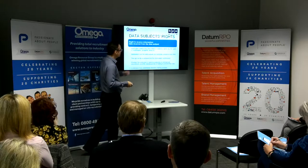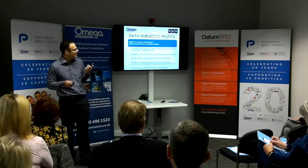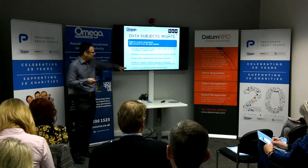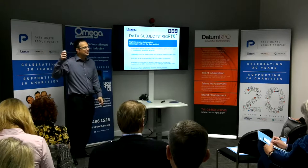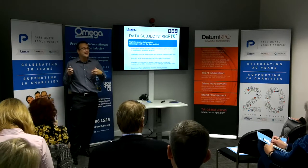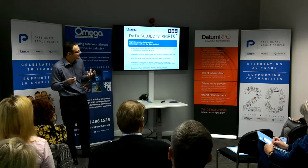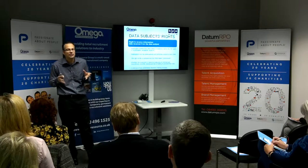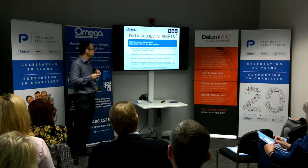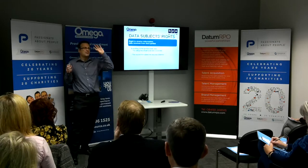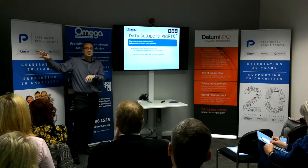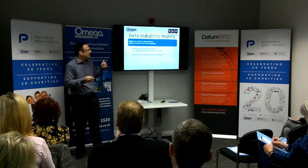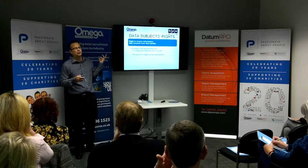You have to explain to individuals whether the collection of the data is a statutory or contractual requirement, and the consequences if they don't provide that information. Finally on the list, you have to explain if your business engages any automatic decision-making process. If you make decisions about individuals based on computer decisions — such as credit checking, where a computer returns a credit score and you make a decision based on it — you have to explain that. And if you receive data about someone from a third party rather than from the individual themselves, you also have to explain the source.